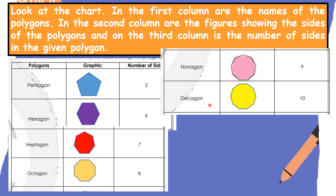Let's proceed with decagon. The prefix is "deca" which means ten. Let us count the number of sides of this figure: one, two, three, four, five, six, seven, eight, nine, ten. Correct.